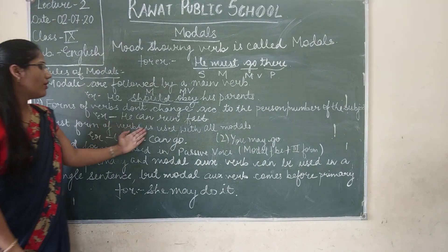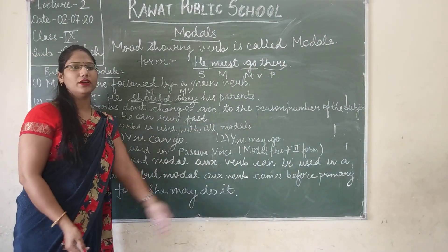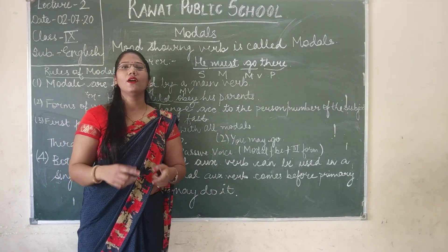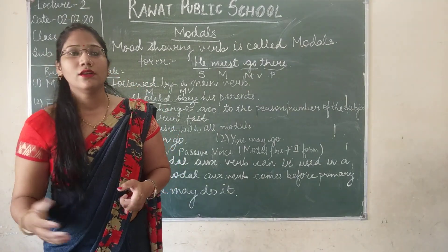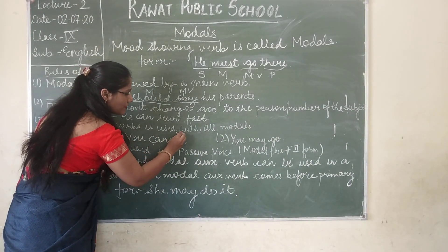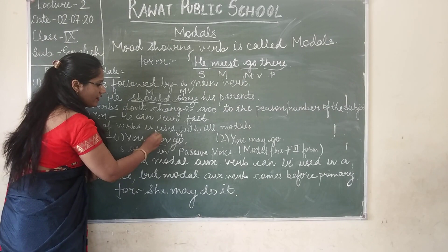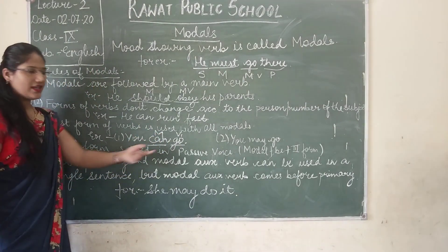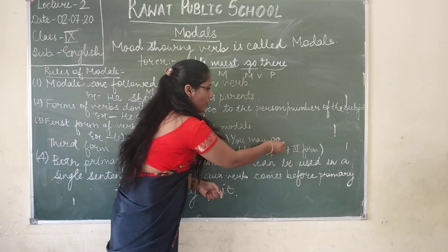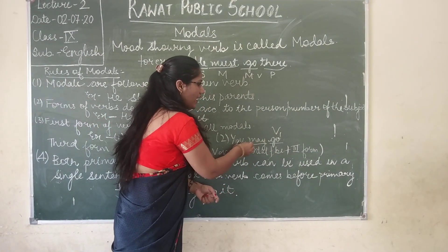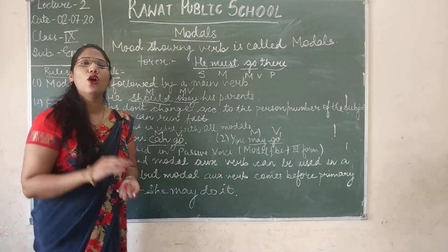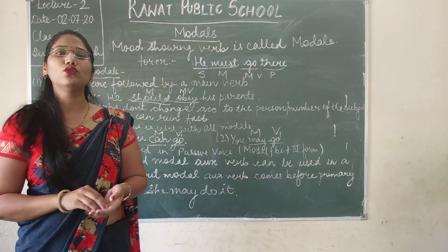Rule 3: The first form of the verb is always used with all modals. For example, 'you can go' — here 'go' is the verb's first form and 'can' is the modal. Similarly, 'you may go' — 'go' is the first form and 'may' is the modal. The first form of the verb is always used with all modals.